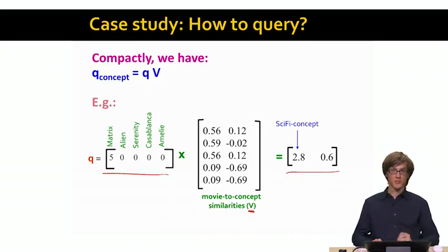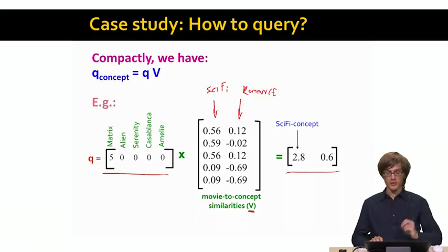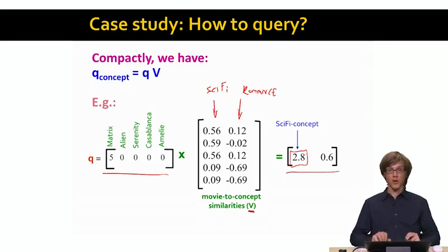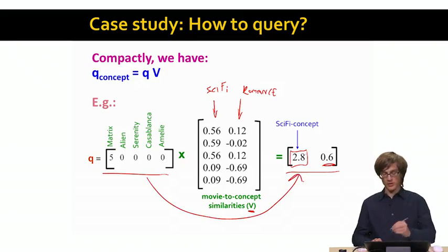Here is what we obtain for this particular user. Now we are in a two-dimensional concept space, where the first column of V is sci-fi and the second column of V is romance. As we do the inner product, we see that our query point corresponds heavily to the sci-fi concept and has a very low coordinate value along the romance concept. This is how we took the query and mapped it into the concept space.